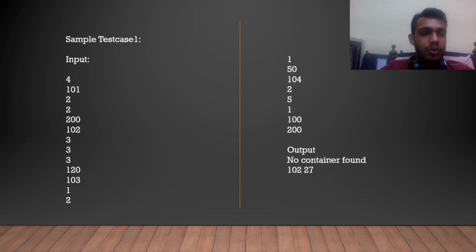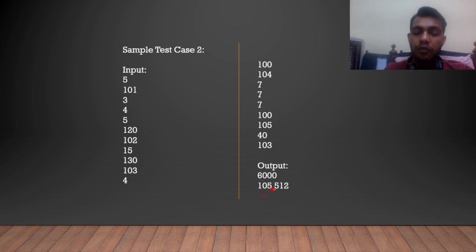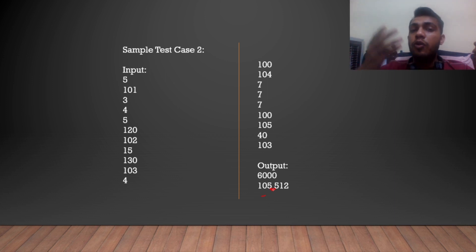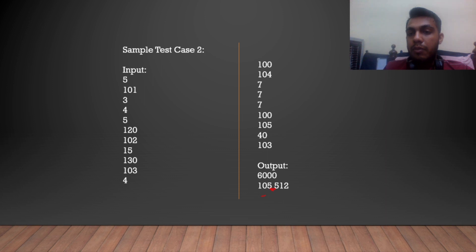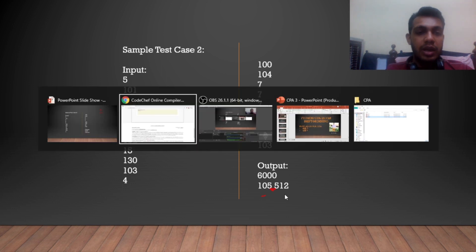These are the test cases. The first test case is no container found, and the second test case is no container found. As you can see, there is a space in between. So when we write a for loop in Python, the numbers will be printed like 105 and then 512, but these will not be in the same line as shown. I will tell you the method of how you can print two results in a single line within the for loop.